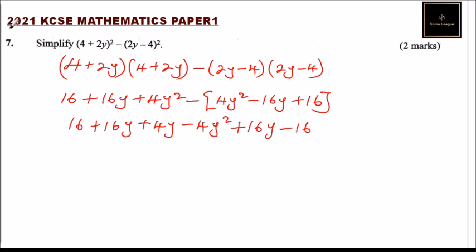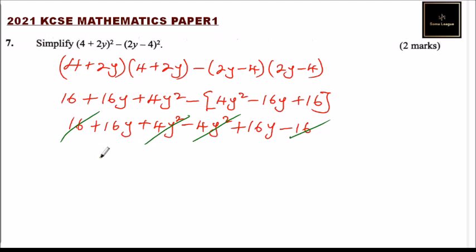Now we simplify by collecting like terms: 4y squared minus 4y squared is zero. 4y minus 4y is also zero. 16 minus 16 disappears to zero. We are left with 16y plus 16y, and that gives us 32y. So the simplified answer is 32y, and that's how you get yourself two marks.